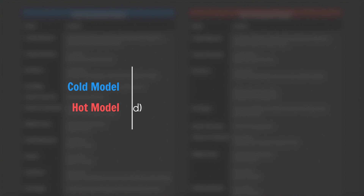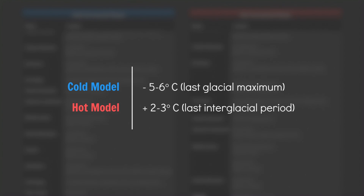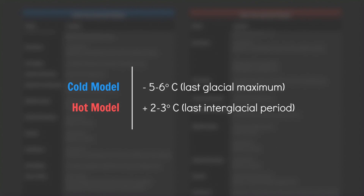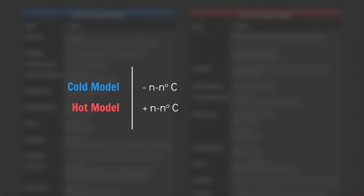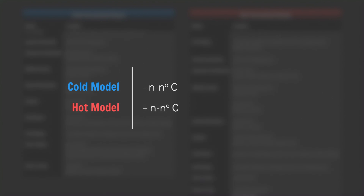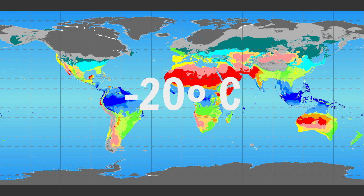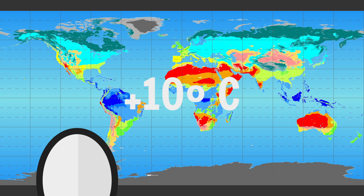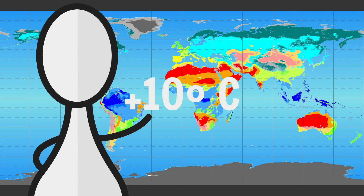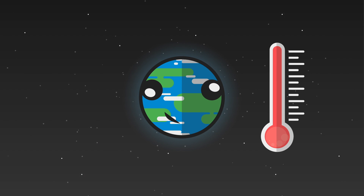Despite these guidelines being derived from specific temperatures, I would advocate using them across a more general temperature range. For worldbuilding purposes, that temperature range can be whatever you want it to be, as long as you can maintain suspension of disbelief. Climate zones are warmer and colder than modern day Earth — done. I know that sounds super fudgy, but sometimes for the sake of your sanity, you just gotta get down with the fudge.